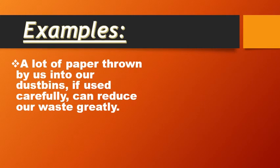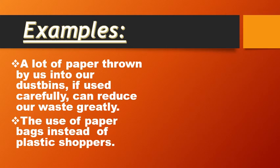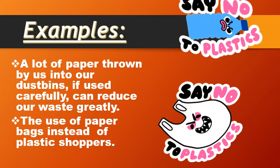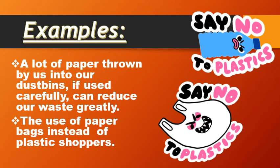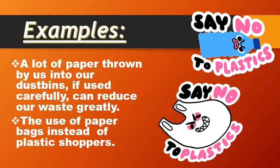How can we reduce the amount of waste we produce? A lot of paper thrown into dustbins, if used carefully, can greatly reduce waste. Using paper bags instead of plastic shoppers can help reduce pollution. Say no to plastic bottles or shoppers. Try to use the minimum amount of plastic because it is a major pollutant — it does not dissolve properly, which enhances pollution. Instead, use paper bags and glass bottles.